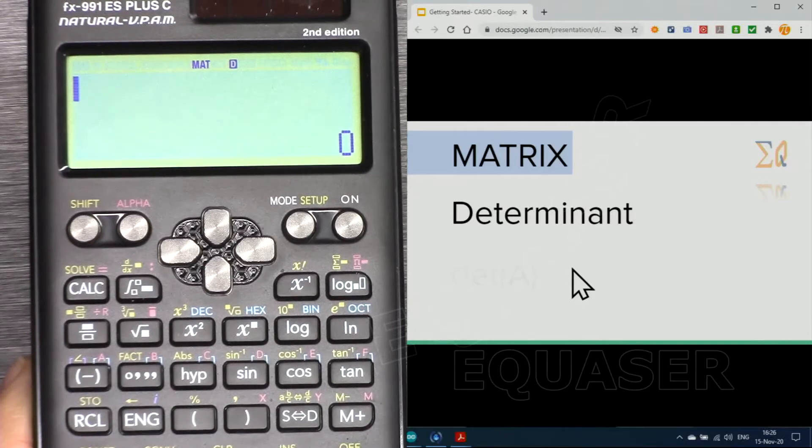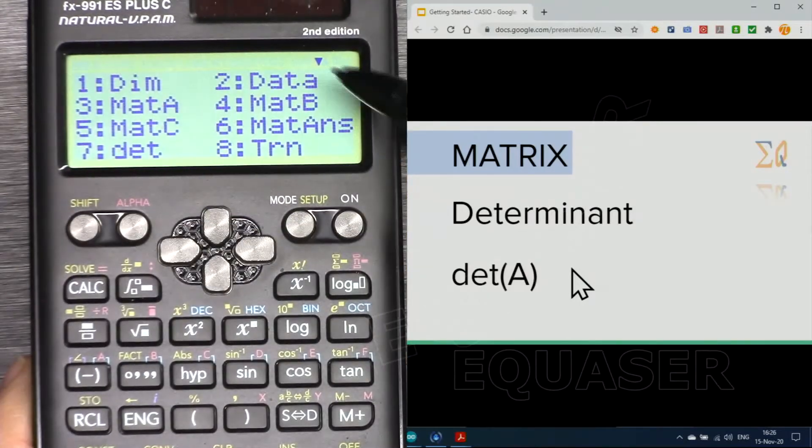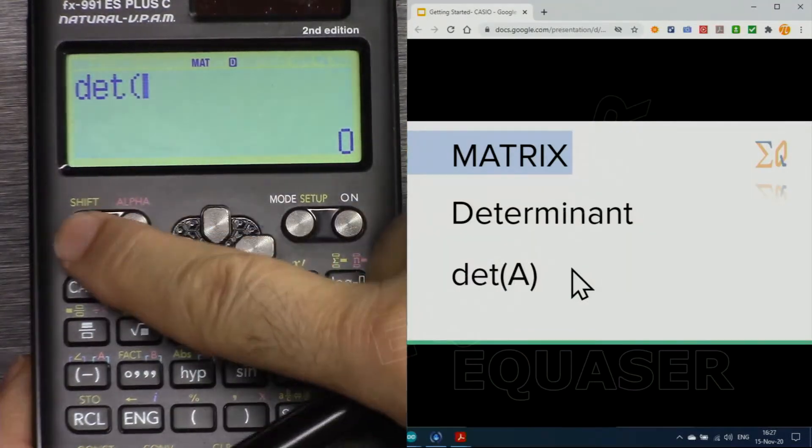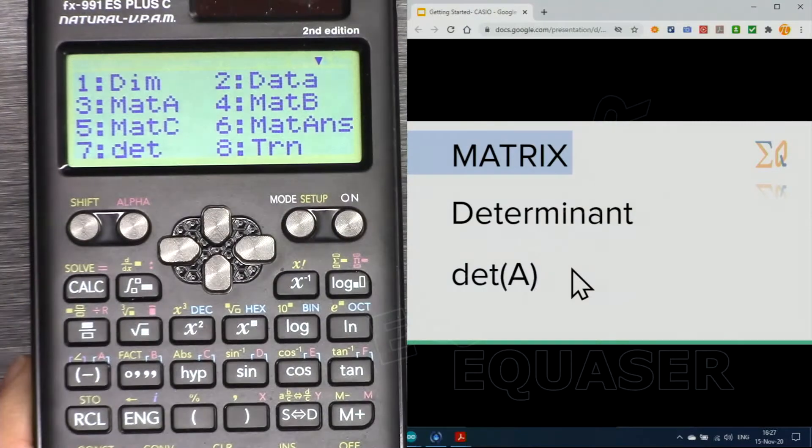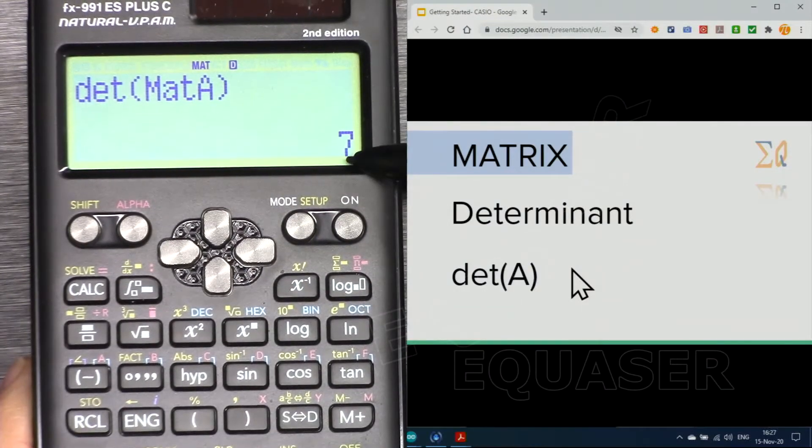If you want to find determinant of a matrix, for example determinant of matrix A, press shift matrix and from here 7 determinant, and bring matrix A, shift matrix A 3, close it. Determinant of matrix A is...